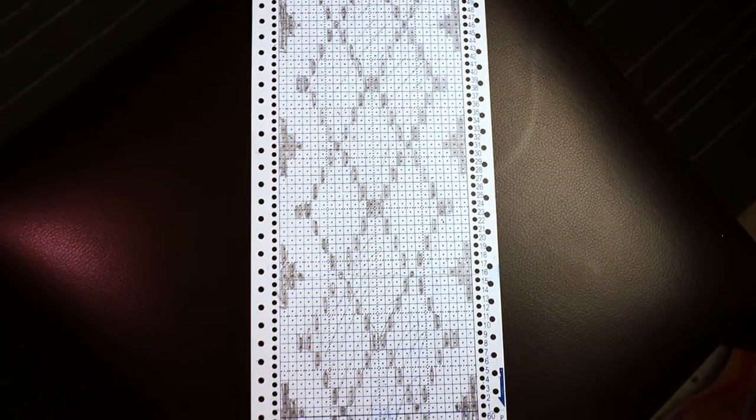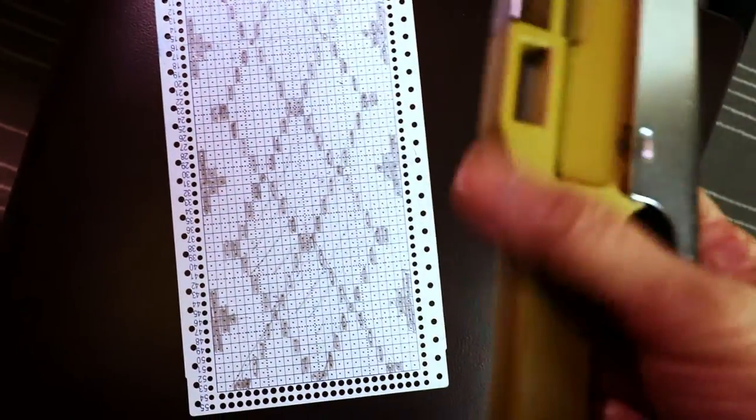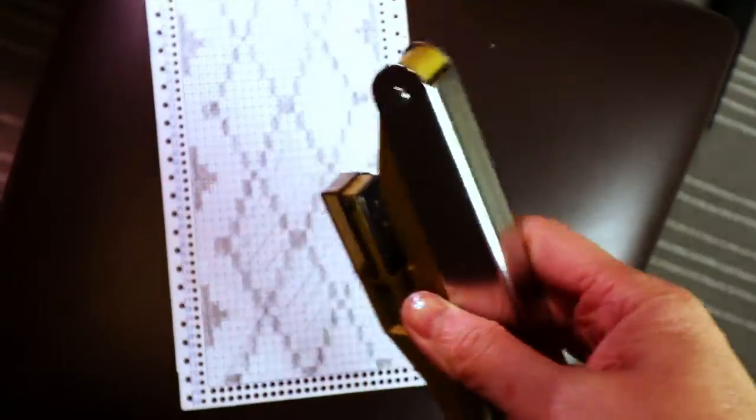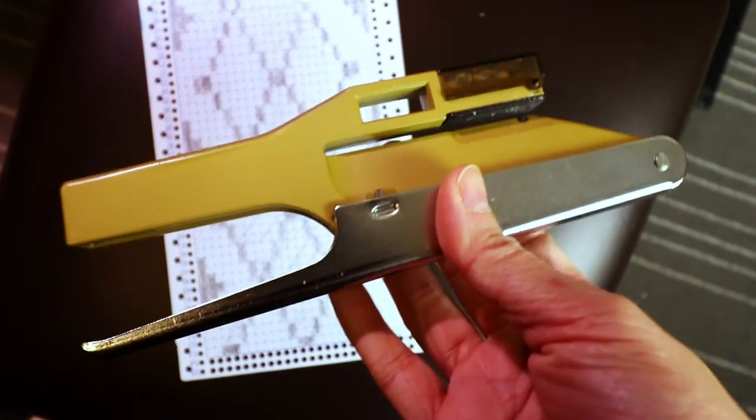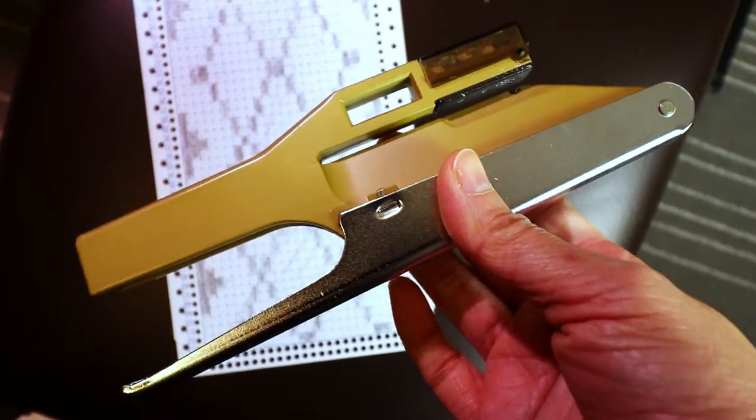Because I'm going to use Fair Isle technique, it will be two colors and I'm using a hand punch from eBay. It's second hand but it works pretty well.